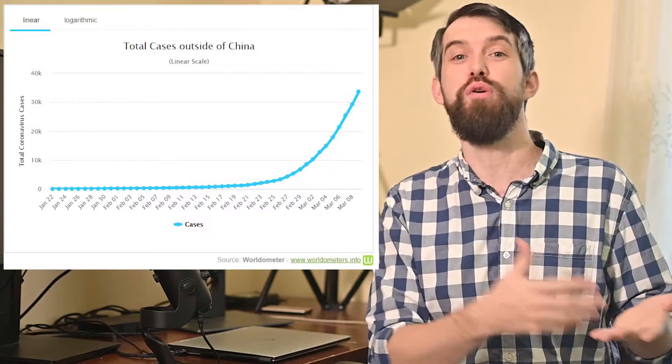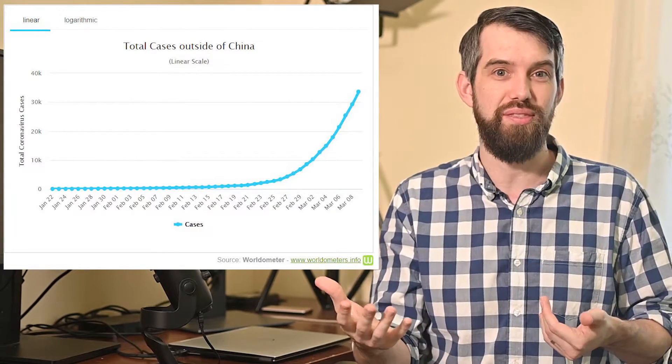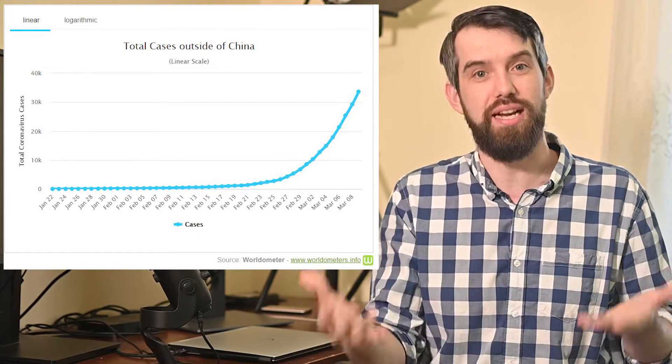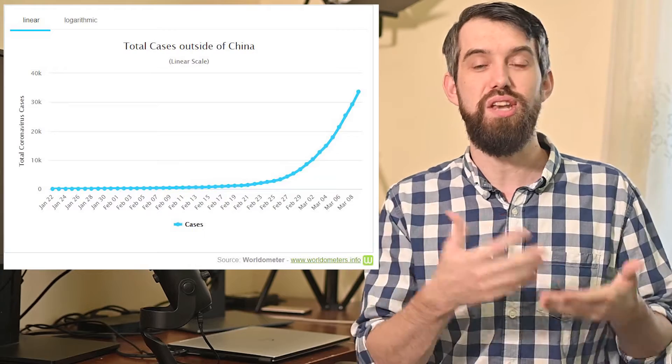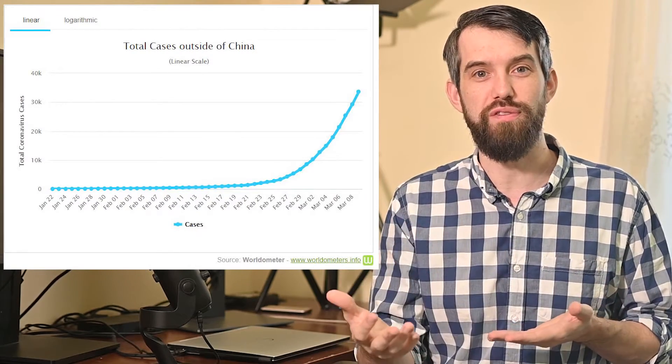This is the graph of coronavirus cases outside of China leading up to March 10th. This is a period before countries were trying different social distancing techniques. As you can see, the number of cases is well modeled by an exponential curve.